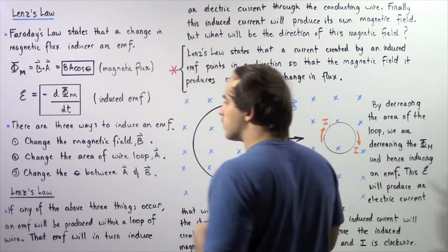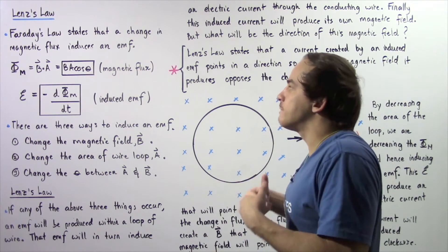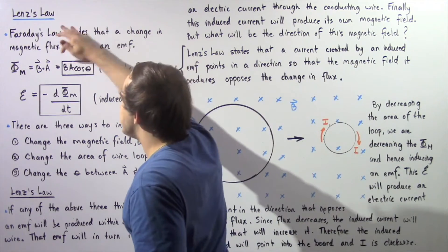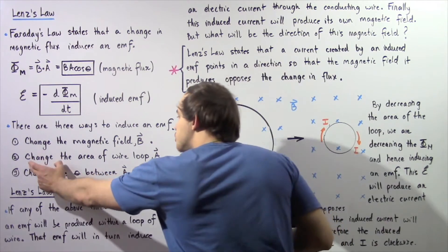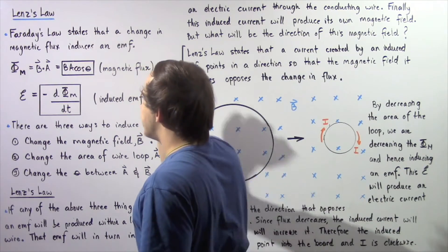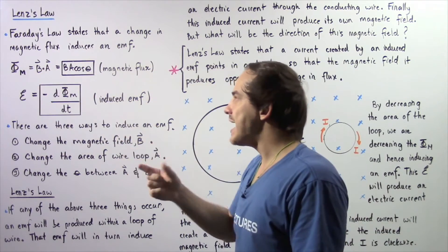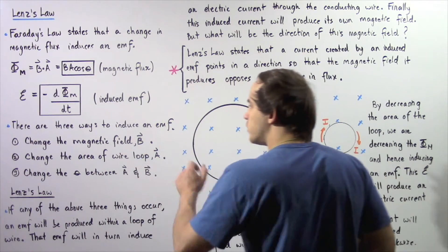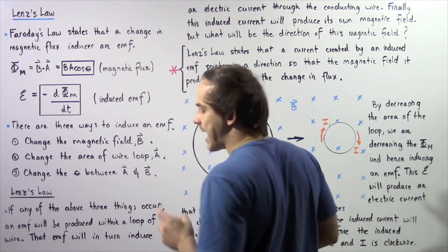The second way we can change our magnetic flux and therefore induce an EMF within our conducting wire is if we keep B constant and either increase or decrease our area A — that is, change the area of the wire loop. And finally, if we keep our B constant and A constant but increase or decrease the angle between them, we change our magnetic flux and so induce an EMF. So the third way to induce an EMF is by changing the angle theta between the vectors A and B.